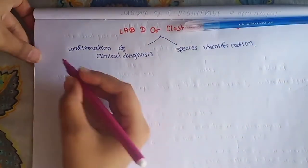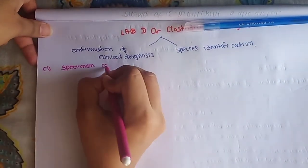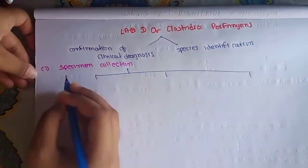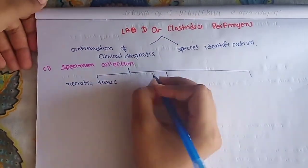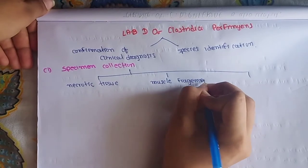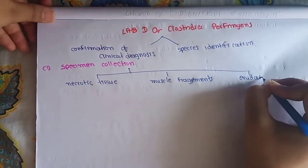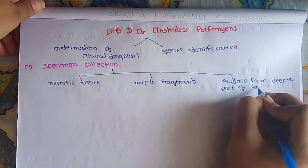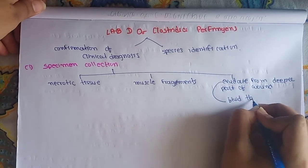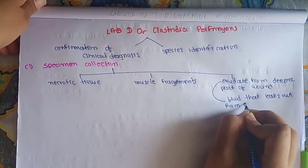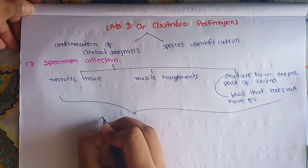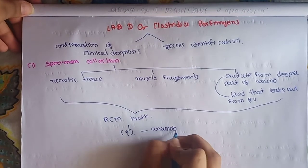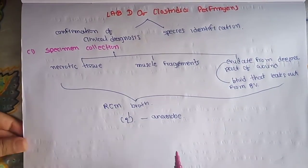The first method is specimen collection. In cases of gas gangrene, we will take three useful specimens: necrotic tissue, muscle fragments, and exudate from deeper part of wounds. What is exudate? Exudate is the fluid that leaks out from blood vessels. These specimens should be put into RCM broth, Robertson cooked meat broth. It should be transmitted immediately. Why? Because they are obligate anaerobes.